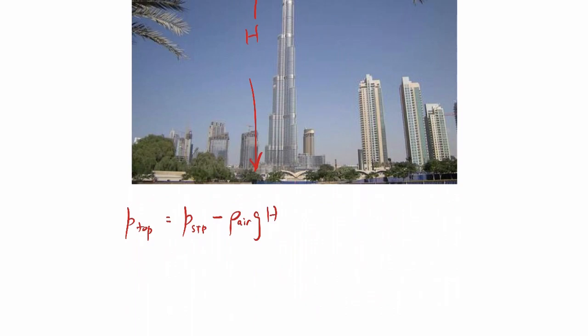So let's plug in some numbers here. So the pressure, standard temperature and pressure, that'll be 101.33 kilopascals absolute. Density of air, we're assuming that it's incompressible. It'll have a density of 1.225 kilograms per cubic meter. Gravity, of course, is 9.81 meters per second squared, and then we said the height was 828 meters. So when you plug in those numbers, we'll get the pressure at the top to be 91.4 kilopascals absolute.